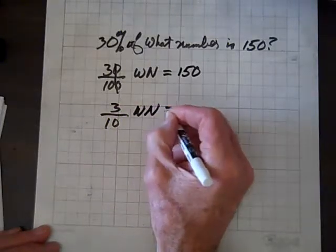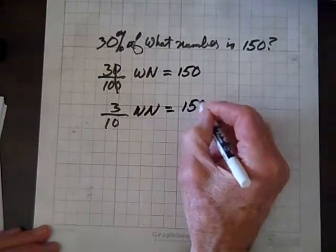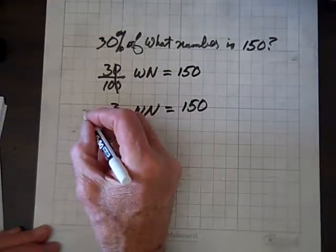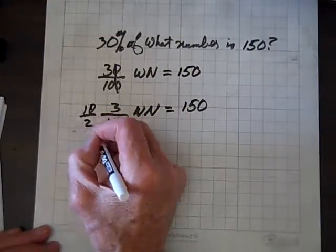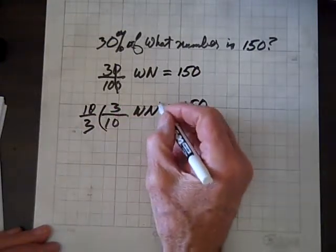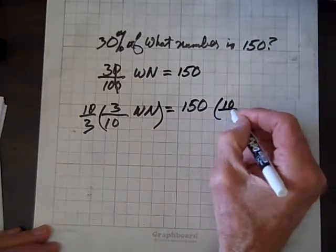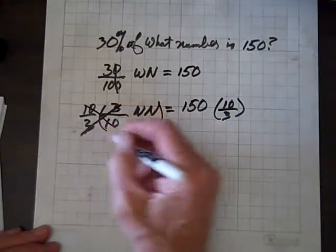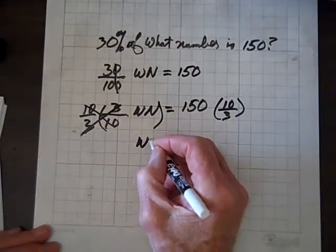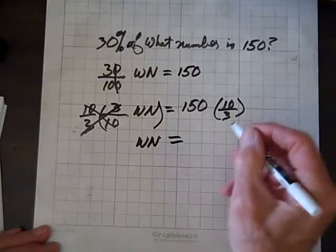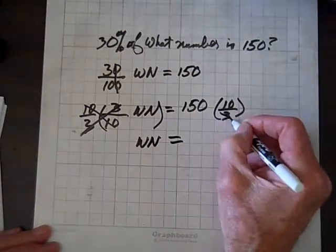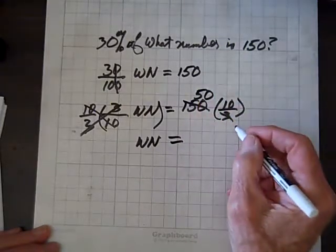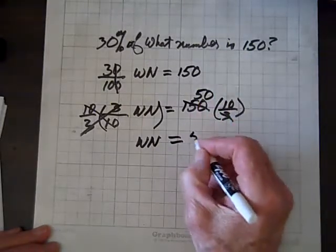3 over 10 times what number equals 150. Now we'll multiply both sides by the reciprocal of 3 tenths, which is 10 thirds. 10 over 3, and these all divide out, give us a 1, and 1 times WN is WN, equals, and 3 goes into 150, 50 times. And 50 times 10 is 500.